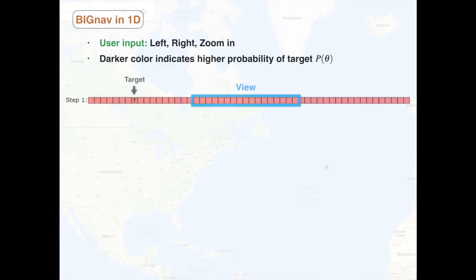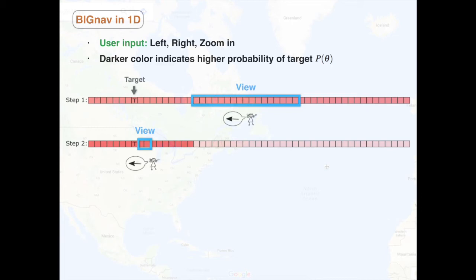Knowing that the target is to the left, the user goes left. Big Nav takes this input into account, updates the probability of each target, and locates the view that maximizes the expected information gain from the user's next input. In this way, Big Nav helps the user find the target in just four steps.